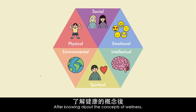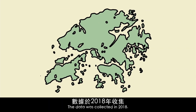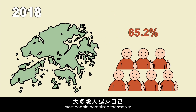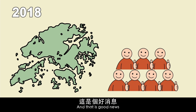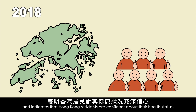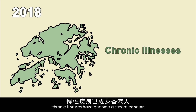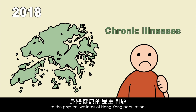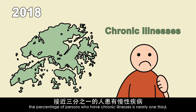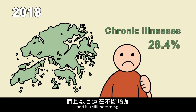After knowing the concepts of wellness, let's look into the health conditions of an average Hong Kong citizen. Data was collected in 2018. In this report, most people perceive themselves as in excellent or good general health condition — good news indicating that Hong Kong residents are confident about their health status. However, on the other hand, chronic illnesses have become a severe concern to the physical wellness of Hong Kong's population. The percentage of persons with chronic illnesses is nearly one-third, and it is still increasing.